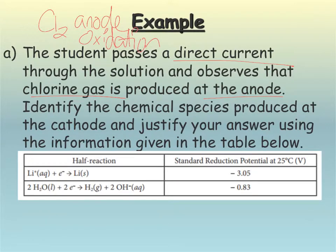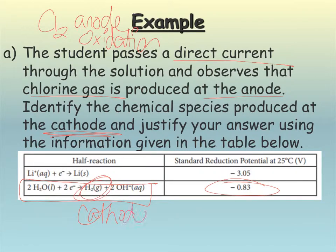Okay. Wants us to identify the species produced at the cathode. So we need to identify who is going to be reduced here. Remember, we have these two things to choose from. We want to go with the most positive. So this is what's going to happen here. So we're going to be giving off hydrogen gas at the cathode and producing OH minus, making the solution a little bit more basic. Okay. Okay.